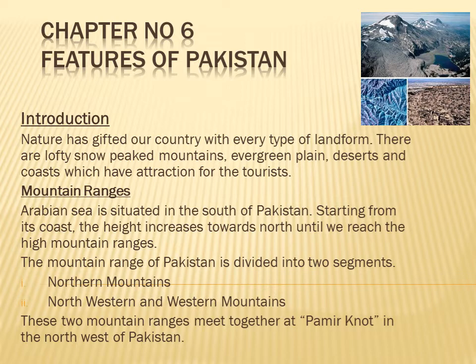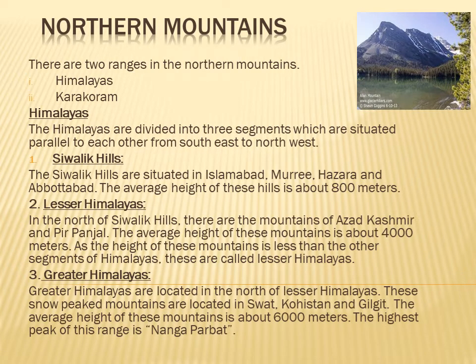The high mountain ranges are divided into two parts: first is Northern Mountains and second is Northwest and Western Mountains. These two mountain ranges are in the northwest of Pakistan. Northern Mountains: there are two ranges in the northern mountains - Himalayas and Karakram.